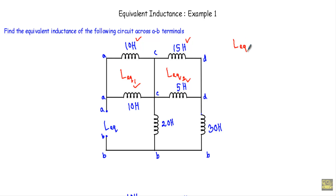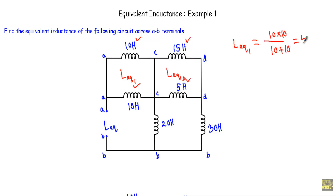Since we have two inductors connected in parallel, we use the formula L1 × L2 divided by L1 + L2, which gives 10 × 10 divided by 10 + 10, equal to 5 henry.